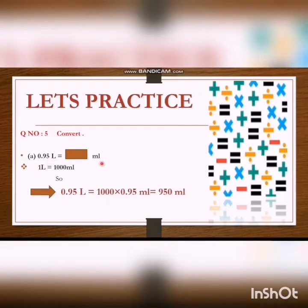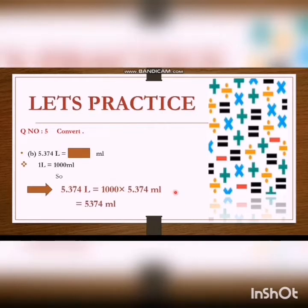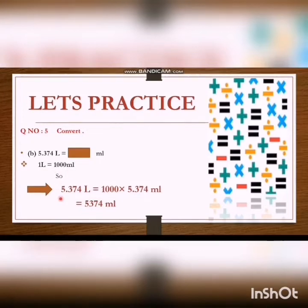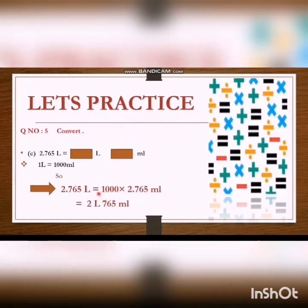Question number 8, part A: 0.95 liters into ml. Liters is a greater value and ml is a smaller value. We multiply by 1000 and we get 950 ml. Part B: 5.374 liters. When we convert it into ml, we multiply by 1000 because 1 liter is equal to 1000 ml. When we multiply 5.374 by 1000, we get 5374 ml.